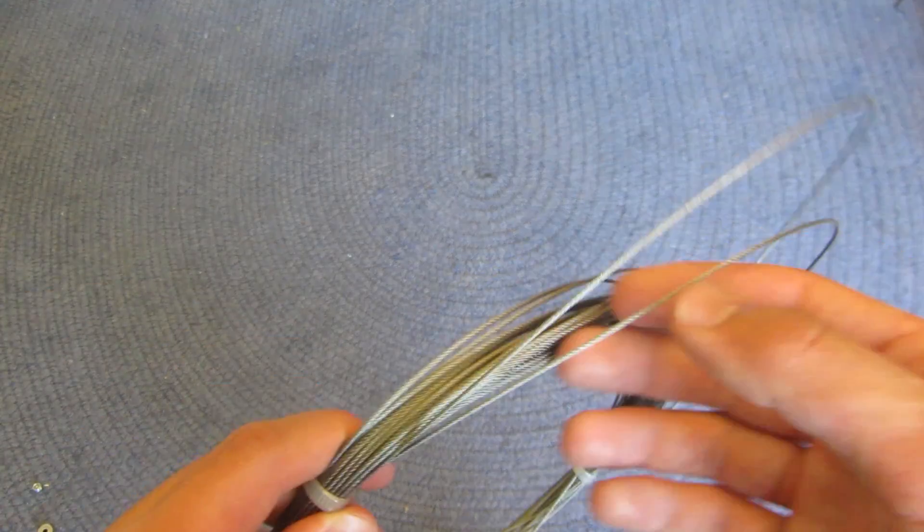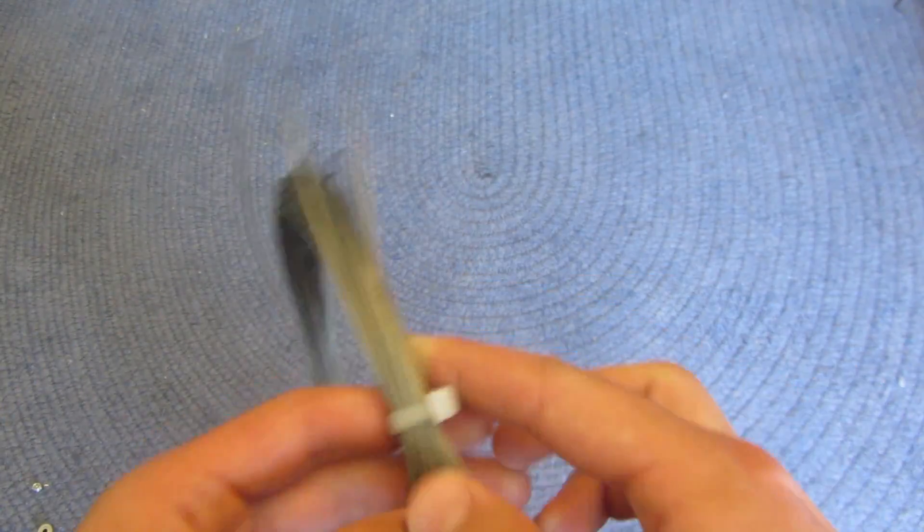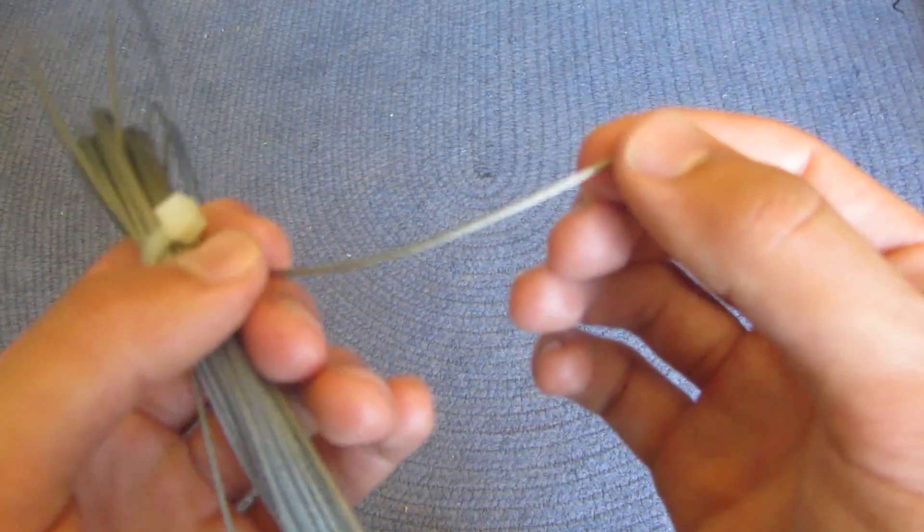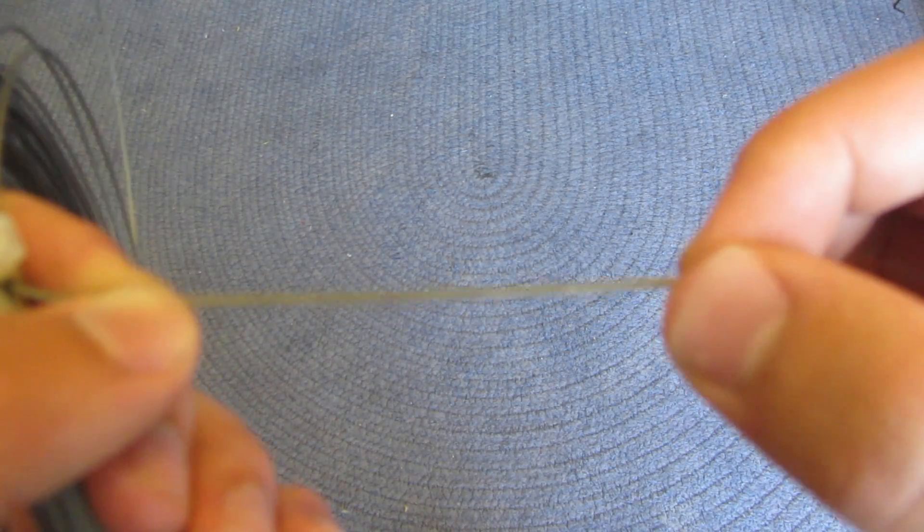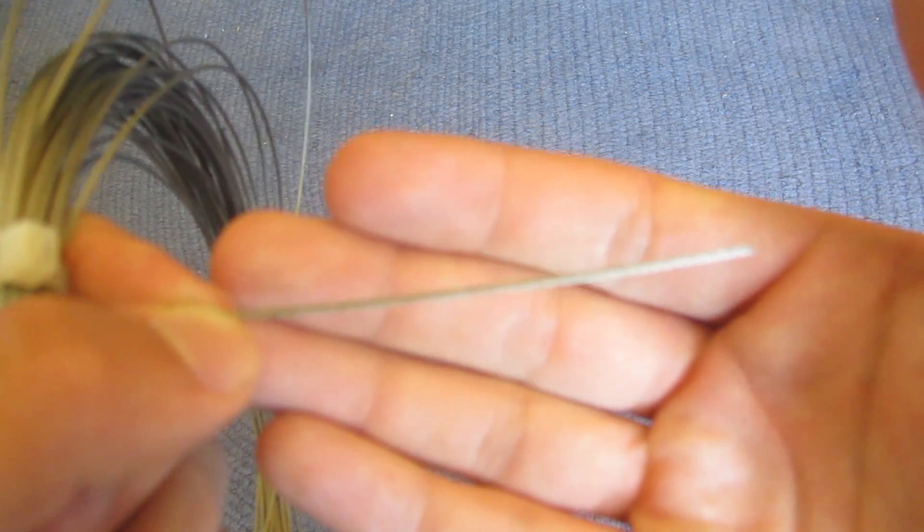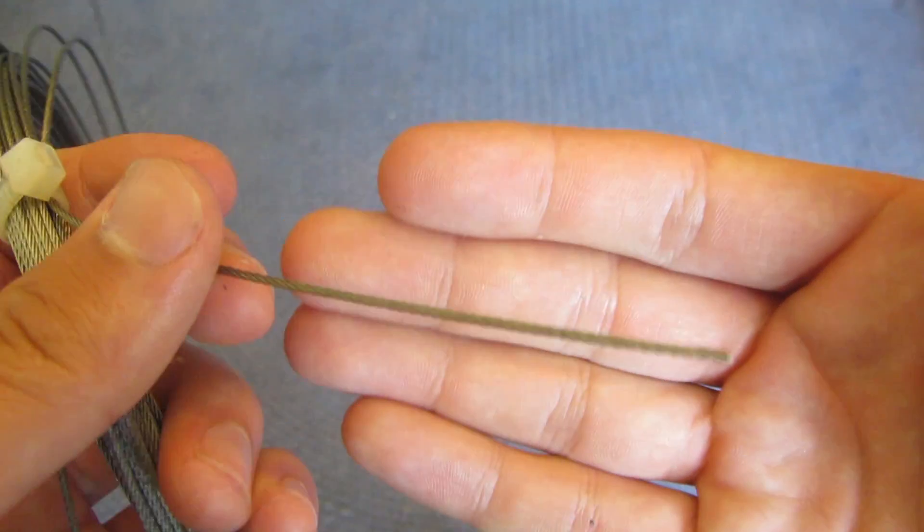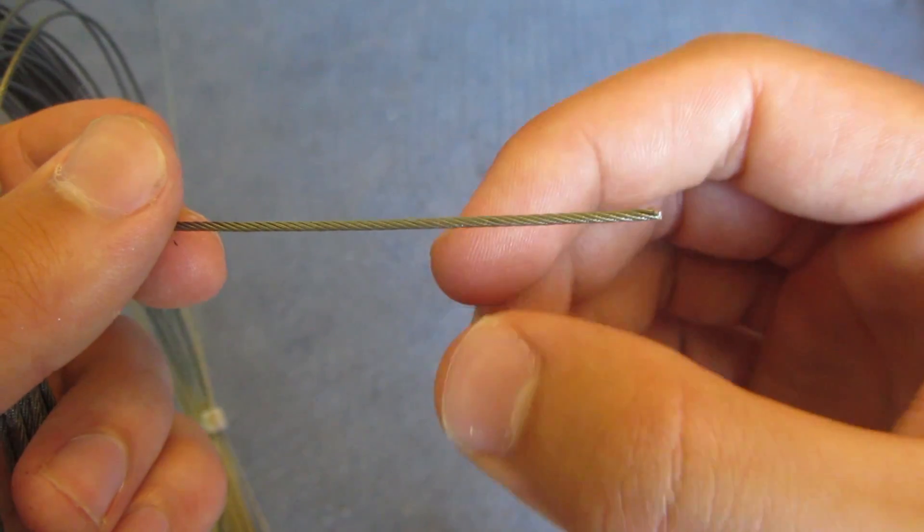This is the steel cable we used. It comes in big loops like this. I think this is like 100 feet or something. We just got this on Amazon. It's 3/64th inch diameter. When you buy steel cable, you want to make sure that you get the 7x7 construction. Because the typical options that you see are 1x7, which means the cord is comprised of 7 different strands.